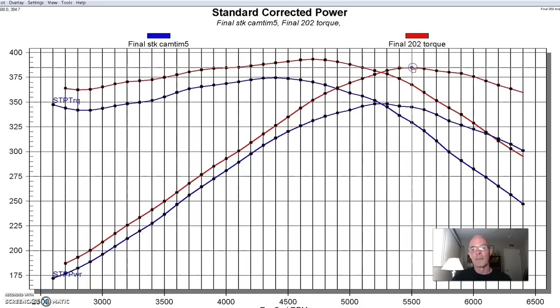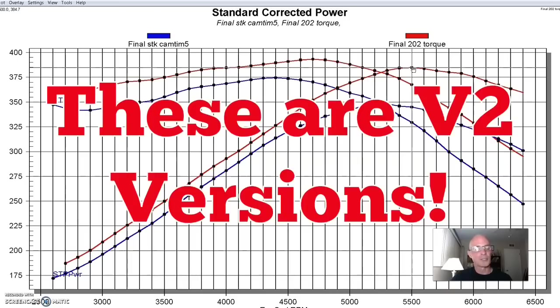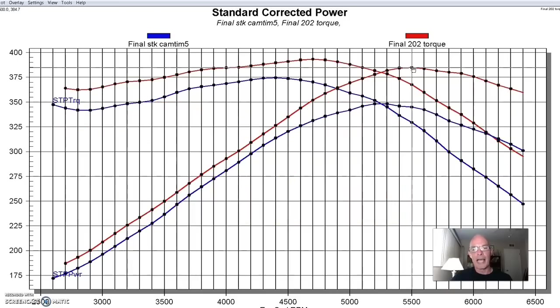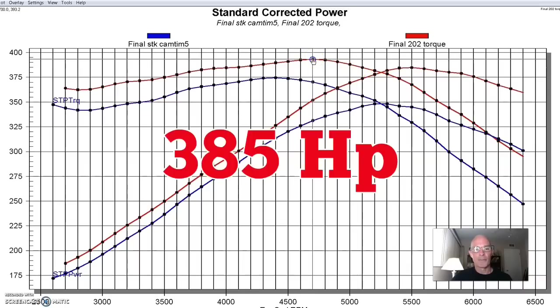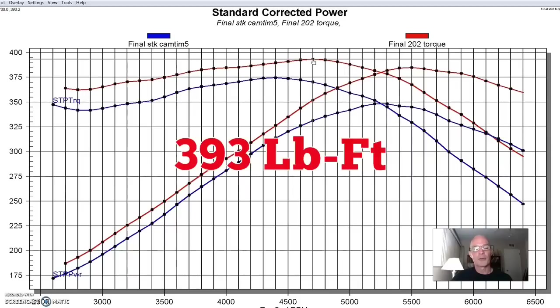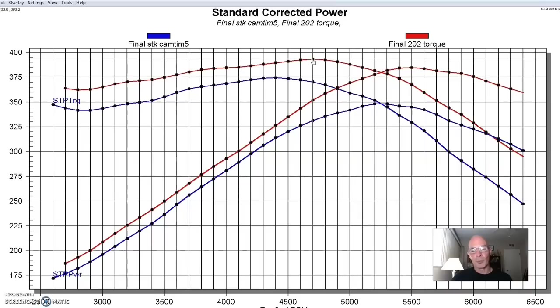So first, let's take a look at our torque cam from Brian Tooley Racing, which is a 202 degree duration, like a single pattern cam. The torque cam basically picked up power everywhere, at the top, in the middle, all the way from the bottom, getting close to 2,500 RPM.